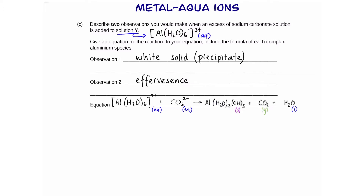The equation gives us the following products: the solid precipitate, carbon dioxide, and water. Don't forget to balance it.